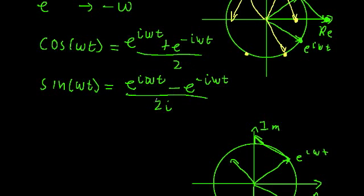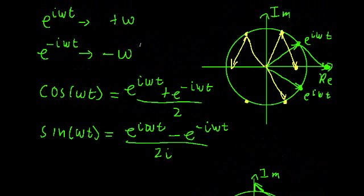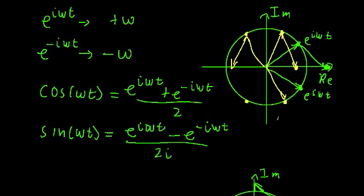The reason I emphasize all this is because in engineering — in signal processing, electrical engineering, and anything related to Fourier transforms — they typically regard e to the i omega t as the most elementary function. The reason is that it has only one frequency component. e to the i omega t has one frequency component, omega. e to the negative i omega t has one frequency component, negative omega. But in the complex plane, in terms of complex exponentials, cosine and sine technically have two frequency components: omega and negative omega. We need these two frequency components to stay on the real axis and the imaginary axis.